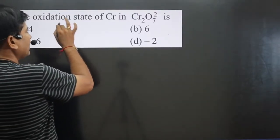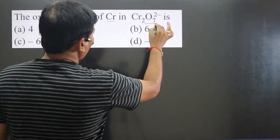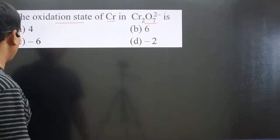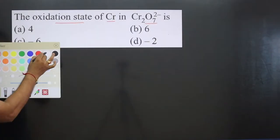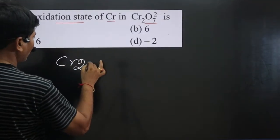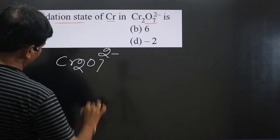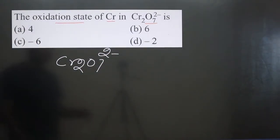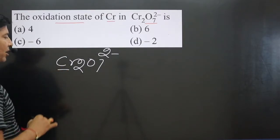The question asks for the oxidation state of chromium in the given polyatomic ion Cr₂O₇²⁻. In this polyatomic ion, we have to calculate the oxidation number of Cr.